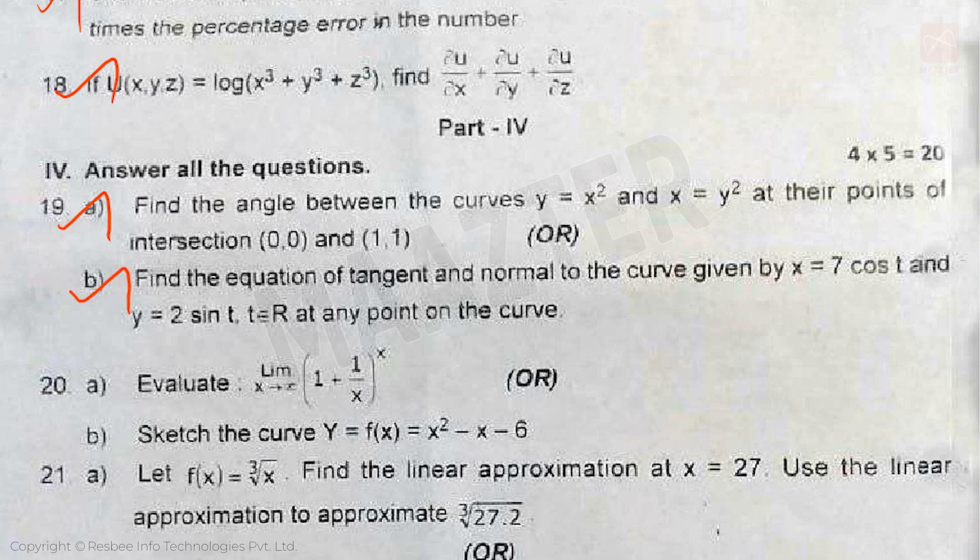Question 19B: Find the equation of tangent and normal to the curve given by x = 7cos t and y = 2sin t, where t ∈ ℝ, at any point on the curve.